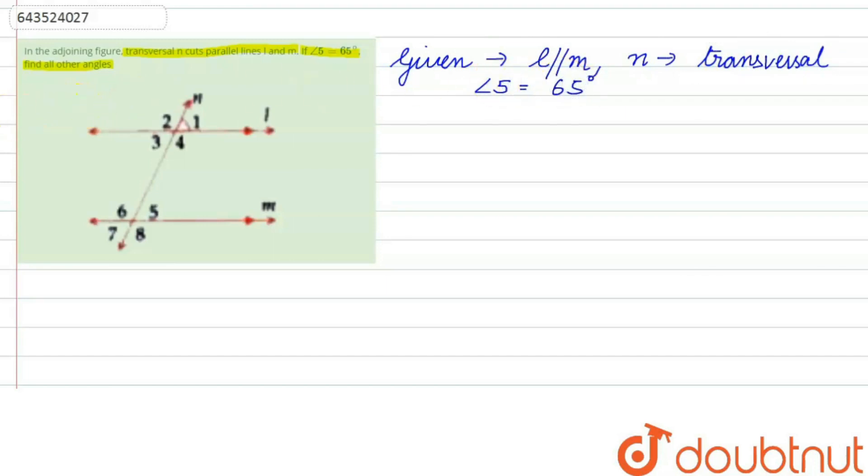We need to find all the other angles. Angle 1 equals angle 5, which equals 65 degrees. Therefore, angle 1 is also 65 degrees because these are corresponding angles. When lines are parallel, corresponding angles are equal.